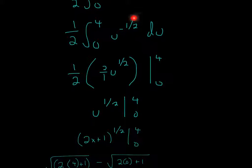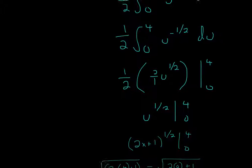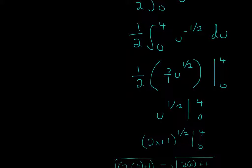To clarify this step: for u to the negative 1/2, I used the power integration rule. All I'm doing is adding 2 over 2 to the exponent, then dividing by the new exponent. What I get is u to the 1/2,